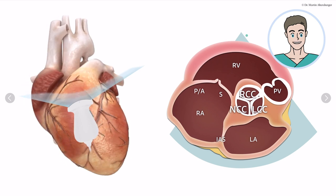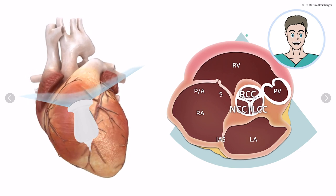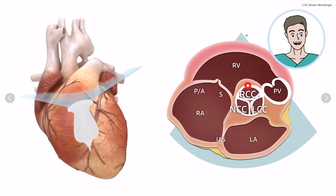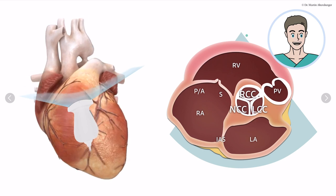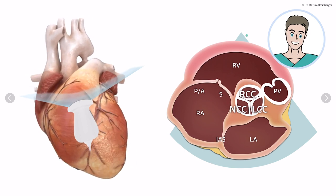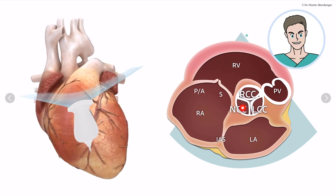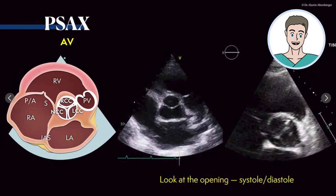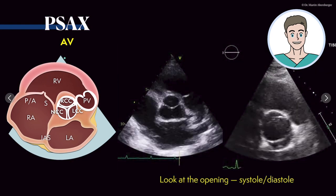Why a parasternal short axis view? With the parasternal short axis view you can really differentiate if there are three cusps. The right coronary cusp always pointing towards the right ventricle, the left coronary cusp pointing towards the left atrium, and the non- or acoronary cusp pointing towards the interatrial septum. So if you have those three cusps you can visualize if there is a normal opening present. Here is an example, and you can also take a look at the compact echocores for the parasternal short axis view.